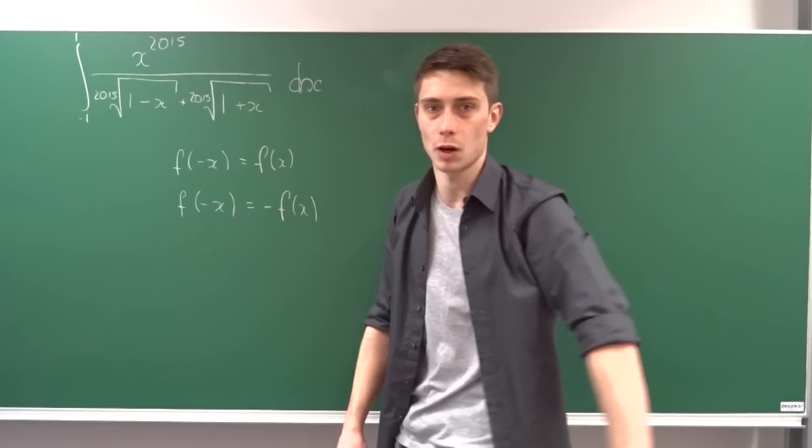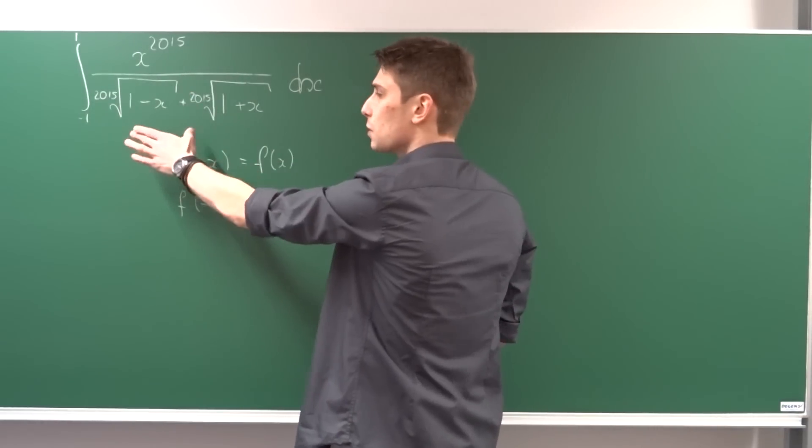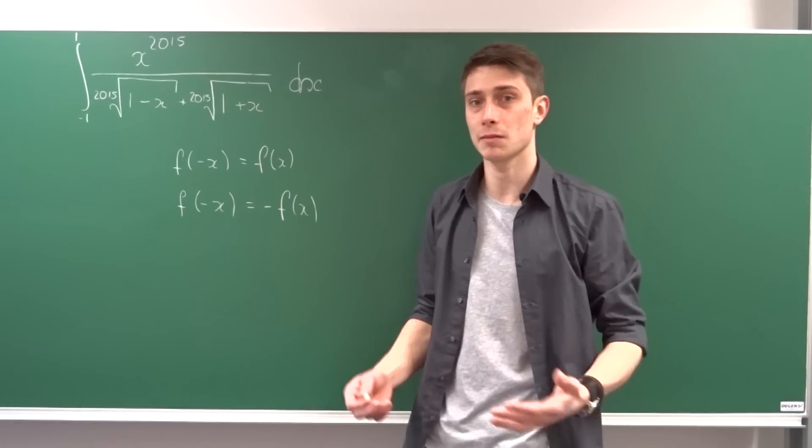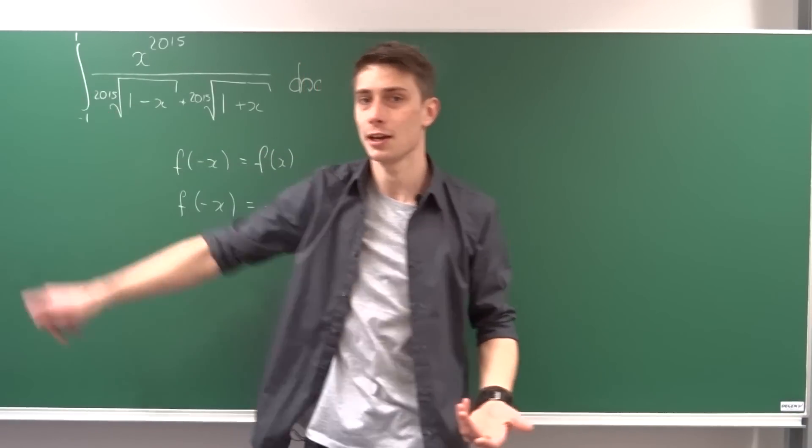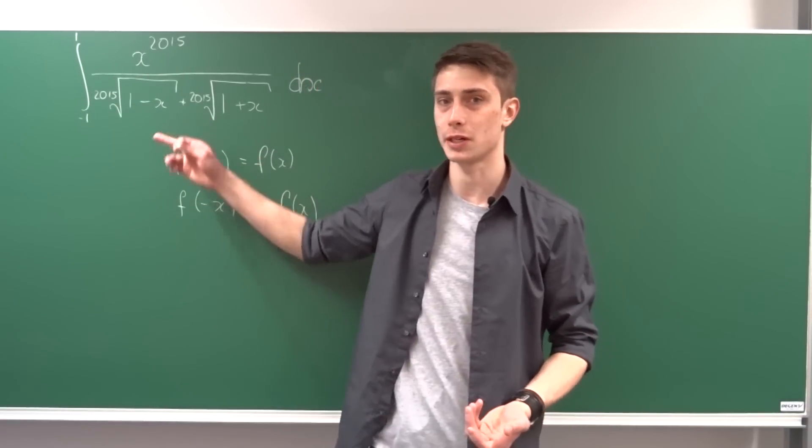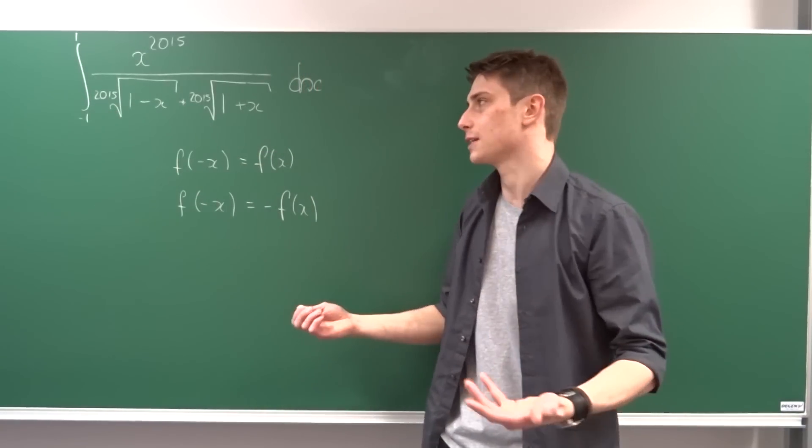And minus x into here is 1 minus x. The numerator stays the same, and the denominator stays the same. But we've got a negative sign in front. That means that the integrand right here is indeed odd, and that means it vanishes.